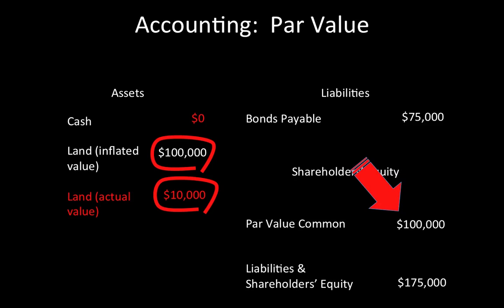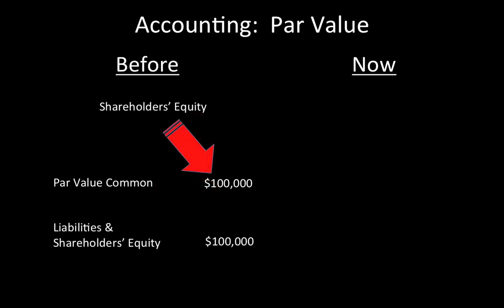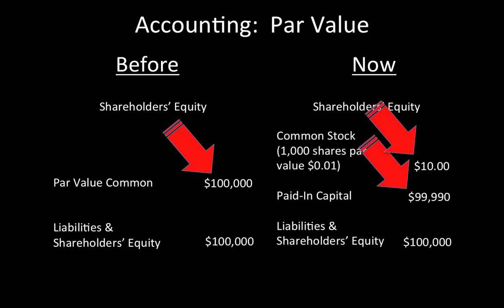Over time, the value assigned to shares was de-linked from its par value. Companies assigned a nominal par value to newly issued shares, with the difference between the par value and the claimed value being accounted for as additional paid-in capital — also referred to as paid-in capital in excess of par value. For example, a $100,000 investment made in return for 1,000 shares might appear on the balance sheet as having a par value of one penny per share, or a total of $10, and having additional paid-in capital value of $99,990.